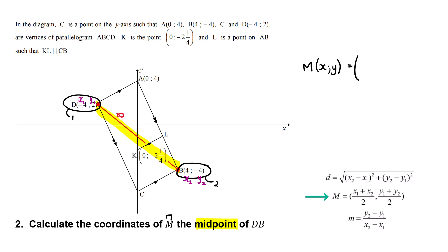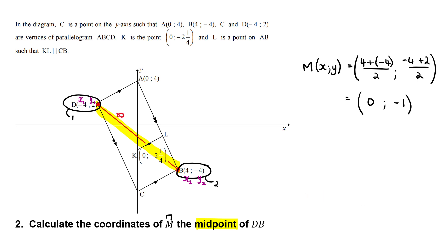The midpoint formula gives us x = (4 + (−4)) / 2 = 0, and y = (−4 + 2) / 2 = −2/2 = −1. So M is the point (0, −1). You should always check whether your answer makes sense — the coordinate (0, −1) sits roughly in the expected position on the diagram, so yes, that makes sense.